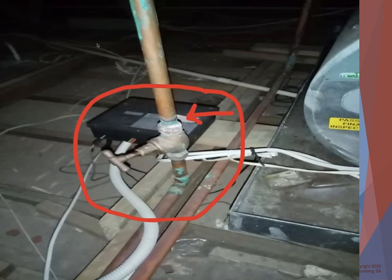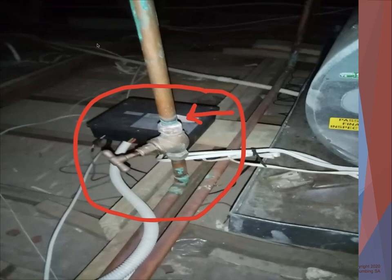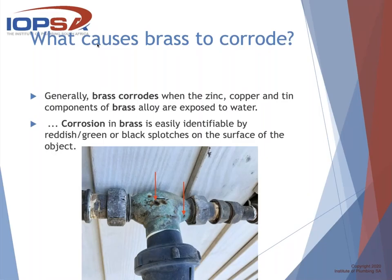Here's a typical example: on the stopcock with no bonding on the geyser, you can see the copper pipe corroding along with the brass. What's happening is that the copper is now acting as an anode and the brass is acting as the cathode, so it starts eating away at the copper. What generally causes brass to corrode? Zinc, copper, and tin components of the brass alloy are exposed to water, and corrosion is identifiable by reddish, green, or black splotches on the surface.